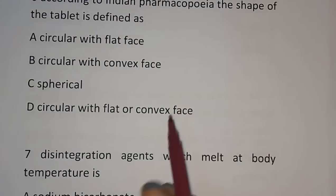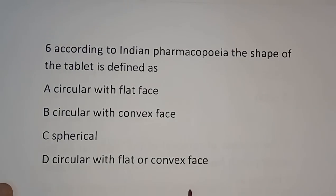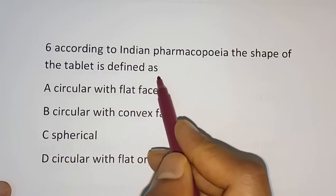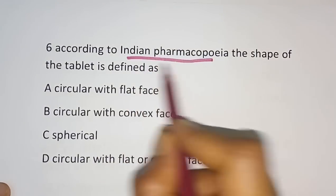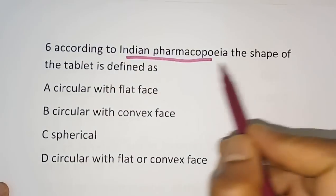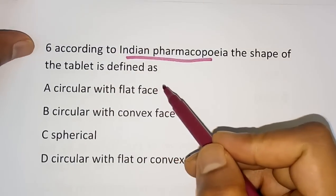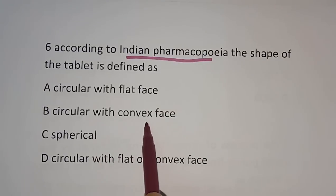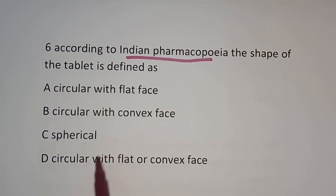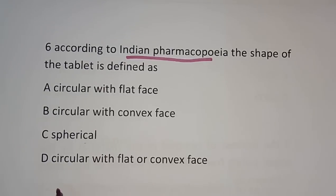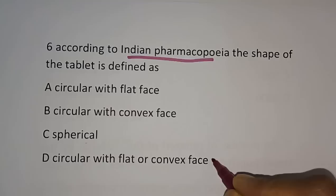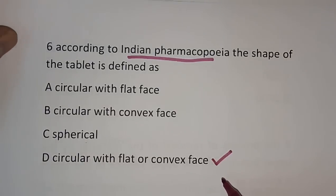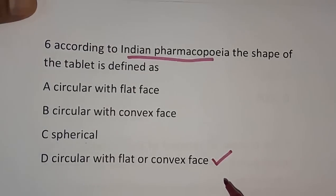Question number 6: According to the Indian Pharmacopoeia (IP), the shape of the tablet is defined as what? Options are circular with flat surface, circular with convex face, spherical, or circular with flat or convex face. The Indian Pharmacopoeia defines the shape of the tablet as circular with flat or convex face. Option D is the correct answer.